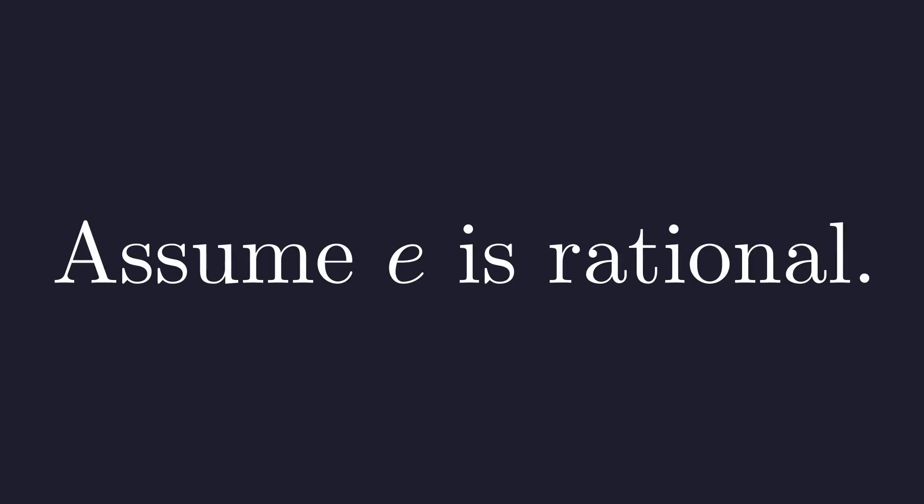Let's begin with our initial assumption that the number E is rational. What does it mean for a number to be rational? It means it can be expressed as a fraction of two integers. So, we can write E as the fraction A over B, where A and B are positive integers.